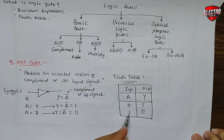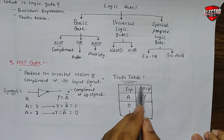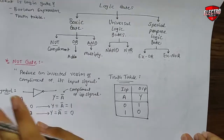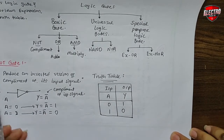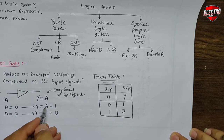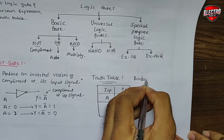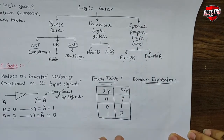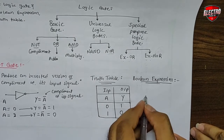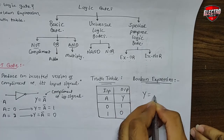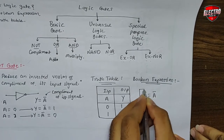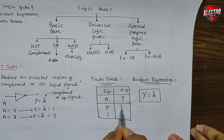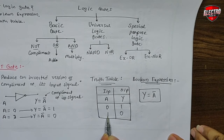The truth table contains all possible combinations of input and the corresponding output signal in one single table. Next is the Boolean expression. The Boolean expression indicates the relationship between input and output by a mathematical equation. For the NOT gate, the Boolean expression is Y is equal to A complement. That means if input signal A is equal to 0, then Y is equal to 1.